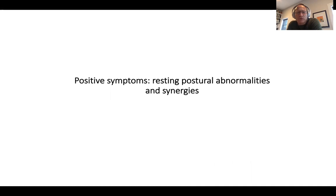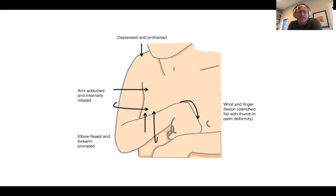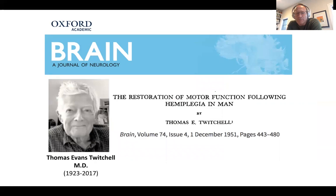So we'll talk about positive symptoms first. These are resting postural abnormalities and synergies, which are unwanted co-contractions of muscles and joints during voluntary movement. We've all seen this phenotype of a patient after stroke: the depressed, protracted shoulder, the arm abducted and internally rotated, with flexion at the forearm and elbow, and then wrist and finger flexion. This is an abnormality whilst they're holding themselves at rest, not trying to move. The analogue during movement is what we call synergies.